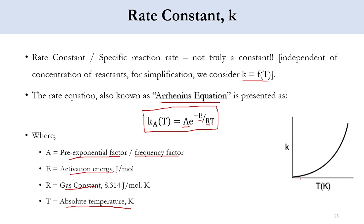With increasing temperature, the value of the specific reaction rate constant increases. In the upcoming lecture we will see how this Arrhenius equation is converted into an Arrhenius plot and how we can find the value of k, the specific reaction rate constant used in rate equations such as -r = k · C_A or k · [C_B² - C_{H₂} · C_D / K_C].